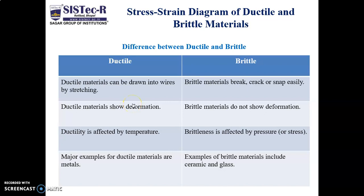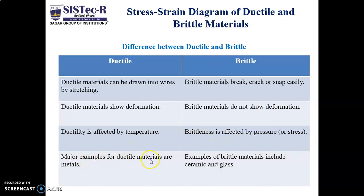Now we are going to discuss the stress-strain diagram for ductile and brittle materials. There is a difference between ductile and brittle material. Ductile material can be drawn into wire form, but brittle material cannot. Ductile material shows deformation, but brittle material does not show any deformation. Ductility is affected by temperature, but brittleness is affected by pressure or stress. Examples of ductile materials are metals; ceramics and glass are brittle materials.